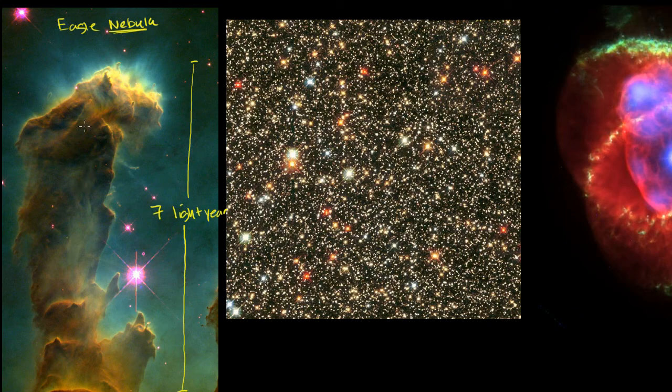We actually think that this structure doesn't even exist anymore. This is 7,000 light years away, which means that what we are seeing now, the photons reaching our telescopes right now, left this region of space 7,000 years ago. A lot of this hydrogen may have already condensed into many more stars.